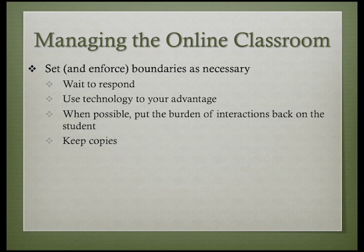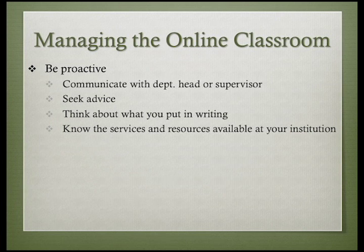When dealing with a difficult student, keep copies of all correspondence. Once you believe the problem has the potential to result in a grade appeal or other academic, criminal, or civil penalty, craft all of your responses keeping the review process at the front of your mind. Think about what your boss or the members of the university court will think when they review what you are writing. Be proactive about dealing with the difficult student — communicate with your department head or supervisor to let him know a problem may be brewing. You may get some needed advice or guidance that will make things easier to handle down the road. Think carefully about which aspects of this background communication should be in writing and which aspects should be face-to-face or over the phone.